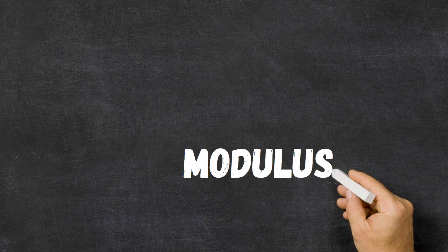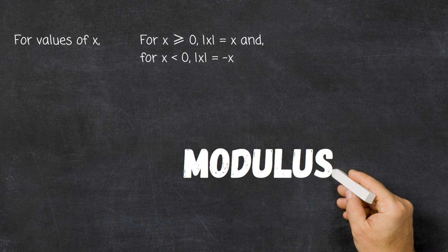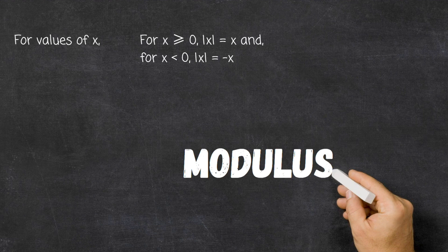For values of x greater than or equal to zero, the modulus of x is simply equal to x. For values of x less than zero — that is, negative values of x — the modulus of x is equal to the negative of that value.